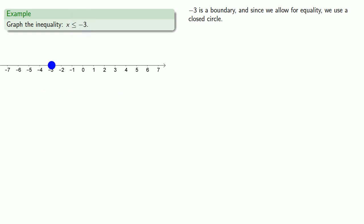Since our inequality is x less than or equal to negative 3, we want everything less than negative 3, so we shade to the left. And we want to use an arrow to indicate that we never stop shading to the left.